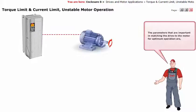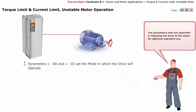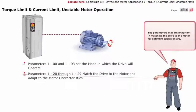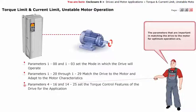The parameters that are important in matching the drive to the motor for optimum operation are: Parameters 100 and 103 set the mode in which the drive will operate. Parameters 120 through 129 match the drive to the motor and adapt to the motor characteristics. Parameters 416 and 1425 set the torque control features of the drive for the application.